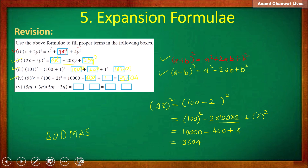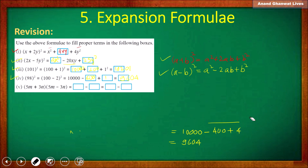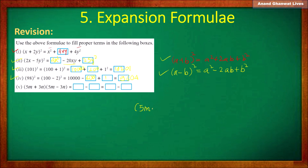Now the 5th question: the product of (5m + 3n)(5m − 3n). Here we have the addition of two terms multiplied into the subtraction of those same two terms.